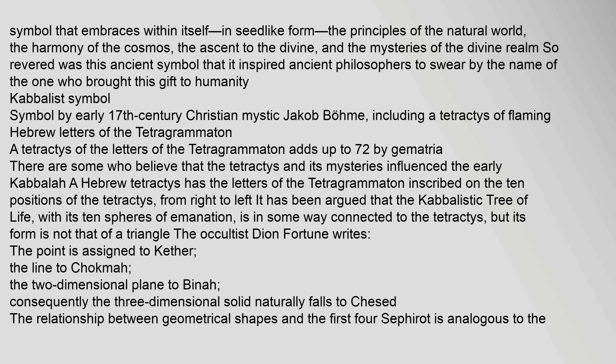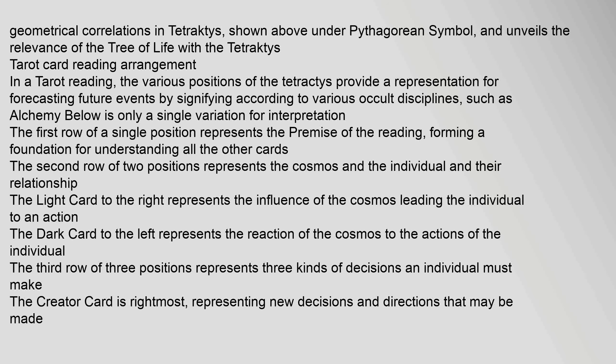It has been argued that the Kabbalistic Tree of Life, with its ten spheres of emanation, is in some way connected to the Tetractys, but its form is not that of a triangle. The occultist Dion Fortune writes: 'The point is assigned to Kether, the line to Chakma, the two-dimensional plane to Binna; consequently the three-dimensional solid naturally falls to Chesed.' The relationship between geometrical shapes and the first four Sephirot is analogous to the geometrical correlations in the Tetractys, and unveils the relevance of the Tree of Life with the Tetractys.